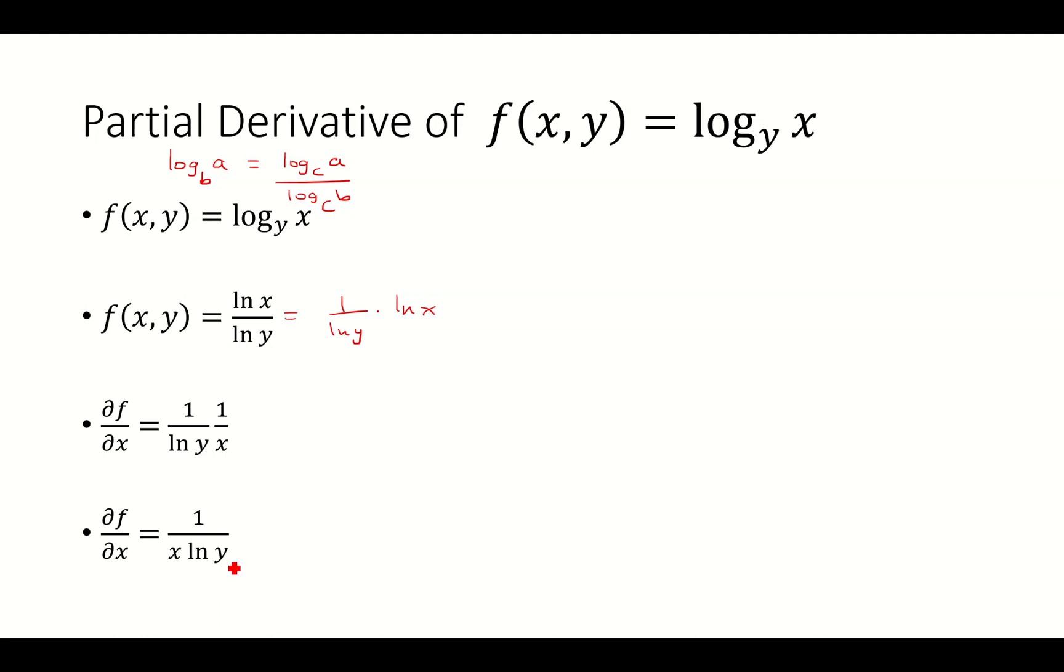Now for the derivative with respect to y, let's first rewrite this as natural log x of natural log y raised to negative 1 power. And the reason I'm doing that is because I'm trying to avoid using the quotient rule. So natural log x here is a constant, and I'm going to use chain rule.